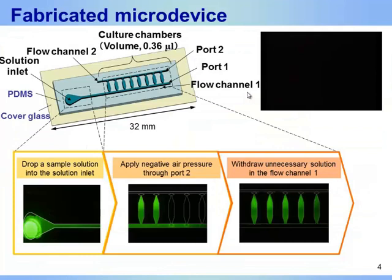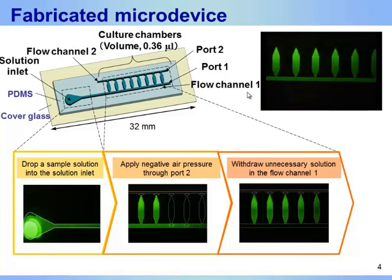In this study, we seeded bacteria in independent culture chambers by simple operation. This figure shows the structure of the device. The device consisted of a PDMS substrate with two flow channels and eight culture chambers and a cover glass to seal the structure. The volume of each chamber was 0.36 µL.